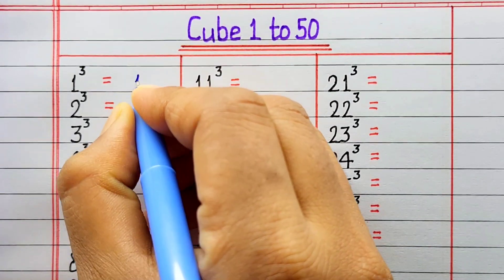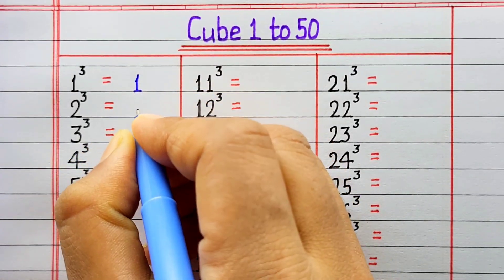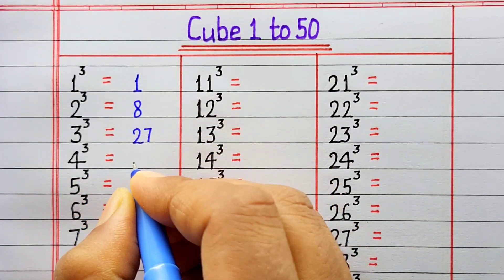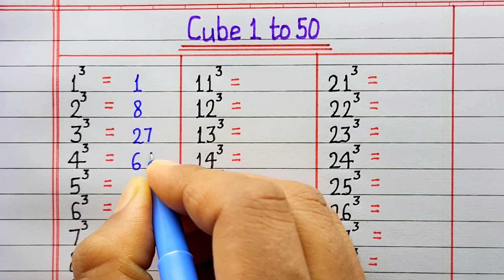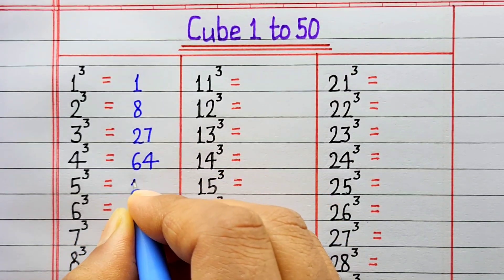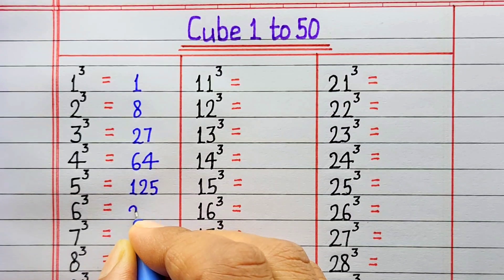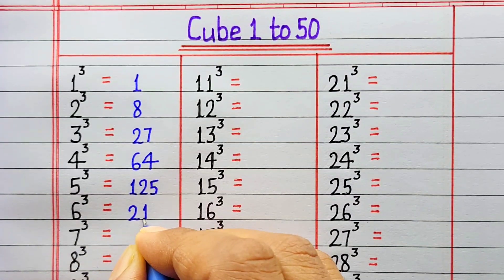Cube of 1 is 1. Cube of 2 is 8. Cube of 3 is 27. Cube of 4 is 64. Cube of 5 is 125. Cube of 6 is 216.